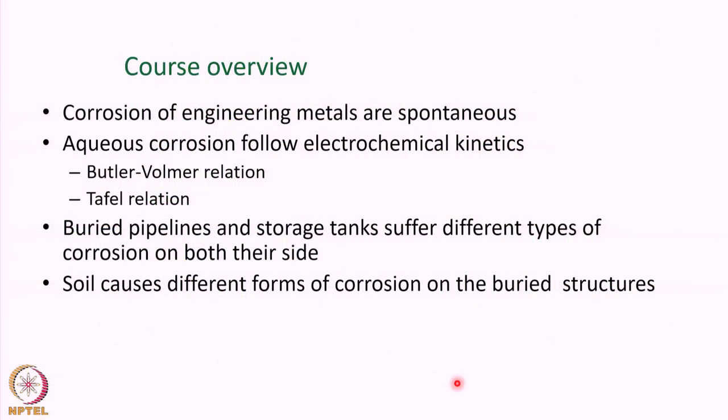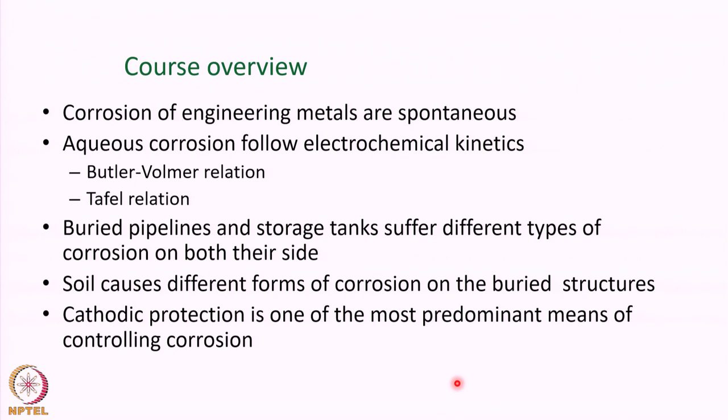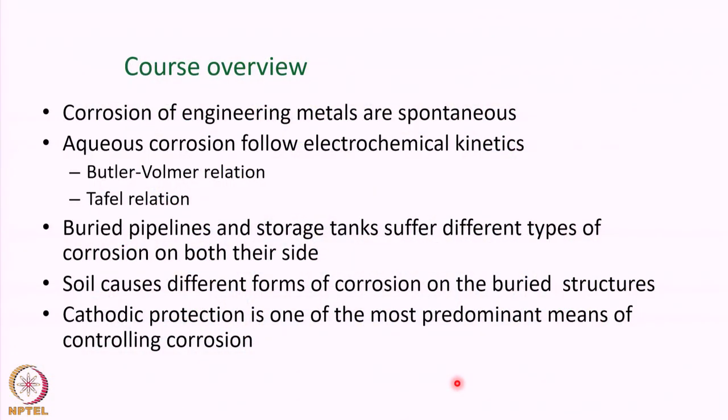Because structures such as pipelines and storage tanks are so large and suffer different forms of corrosion, cathodic protection is one of the most predominant means of controlling corrosion, as opposed to the various other methods available in a typical plant. The cathodic protection criteria are most important: the instant-off potential of minus 0.85 V with respect to the copper/copper sulfate electrode.